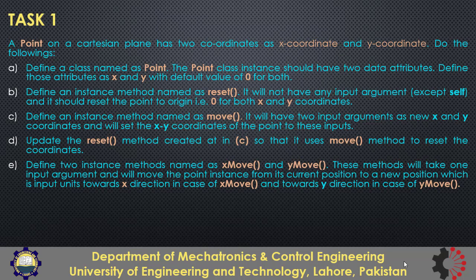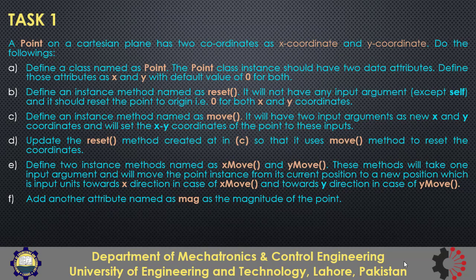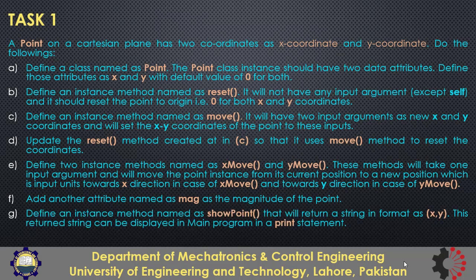Then you need to create two more instance methods named xmove and ymove to move the point horizontally or vertically by passing in the displacement amount as an input argument. Then you need to create another data attribute for the magnitude of a point, which is basically the distance of the point from the origin. Finally, you need to create another instance method named showPoint that will return a string in proper format as x,y inside parentheses.